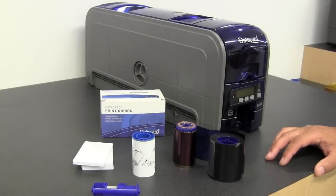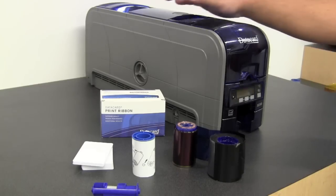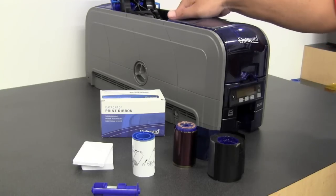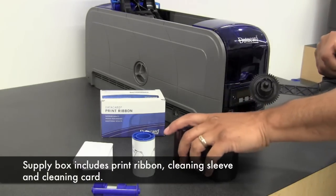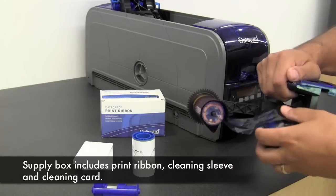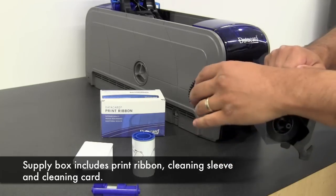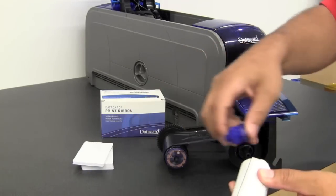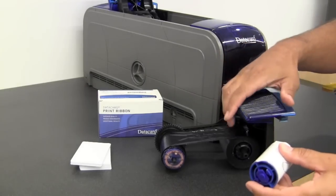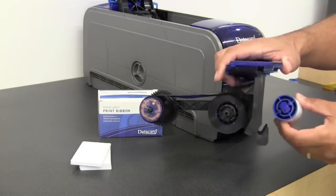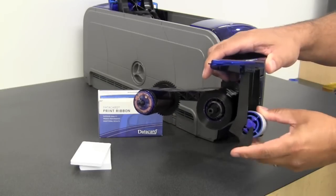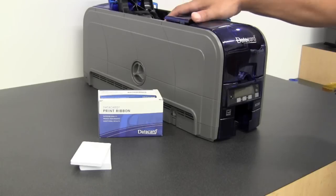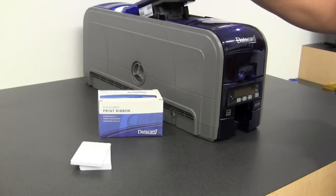After you unpack the printer, you want to load the supplies. First step is open the print cover and install the supplies and cleaning sleeve. Remove the supplies cartridge, place your ribbon on the cartridge, place your cleaning sleeve on the spindle, install the spindle, remove the cover, place the spindle in the printer, and close the cover.